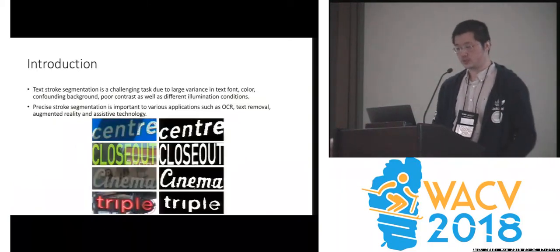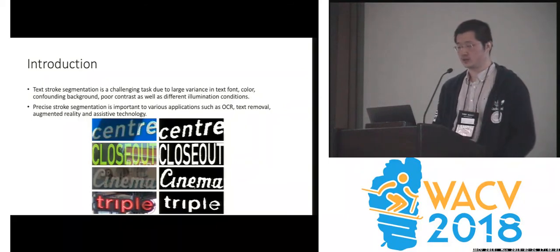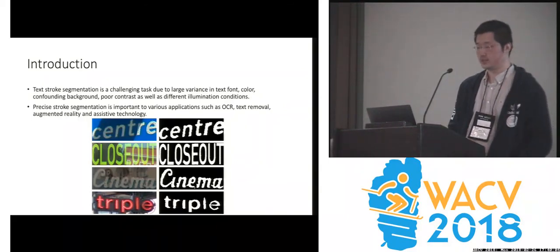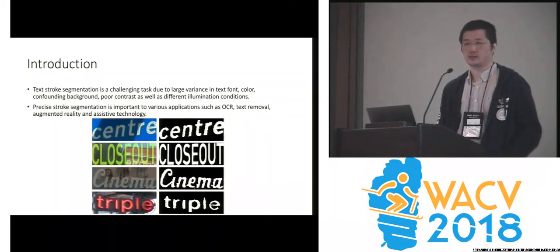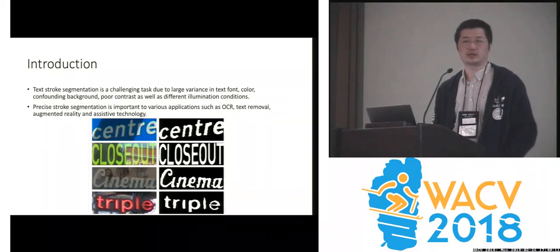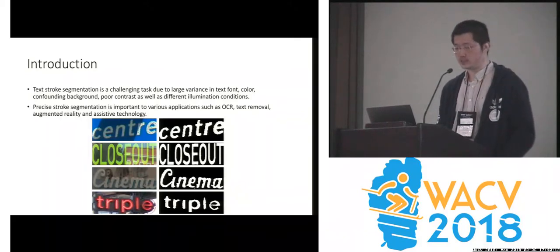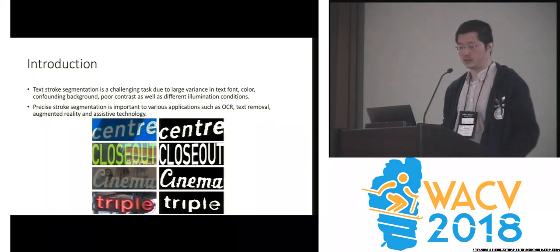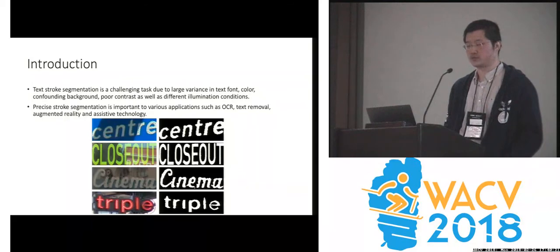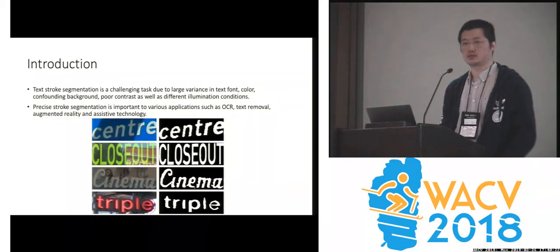Accurate text stroke segmentation is important in many applications such as OCR, text removal, augmented reality, and style transfer. For easy cases, decent results can be achieved with a simple adaptive thresholding like Otsu thresholding. But for more challenging cases with large variance in text font, color, and cluttered background contrast, as well as different illuminations, more sophisticated methods are needed.